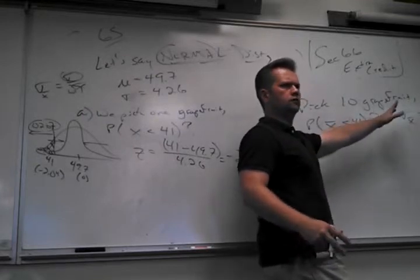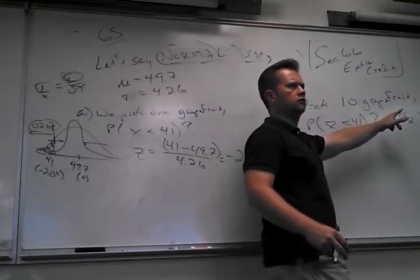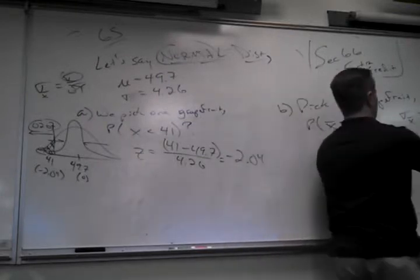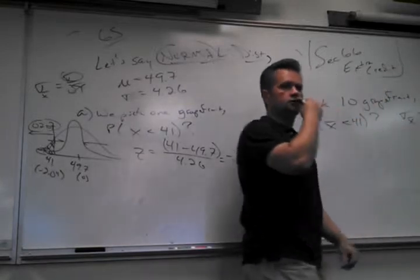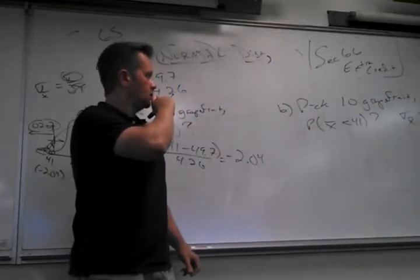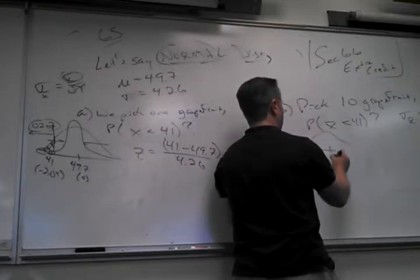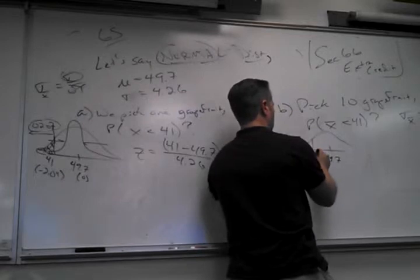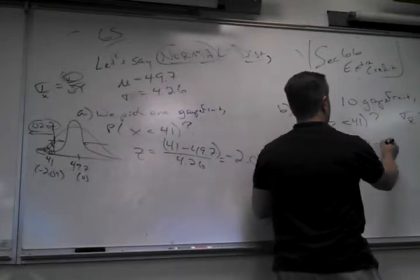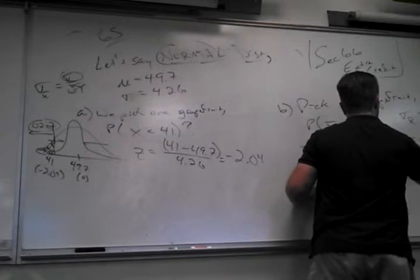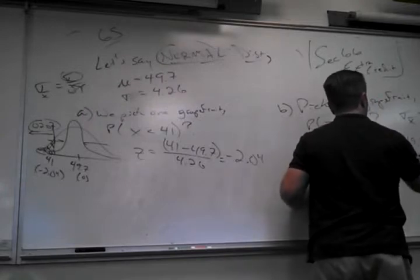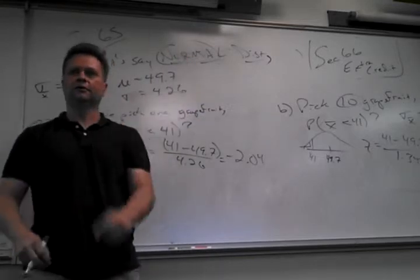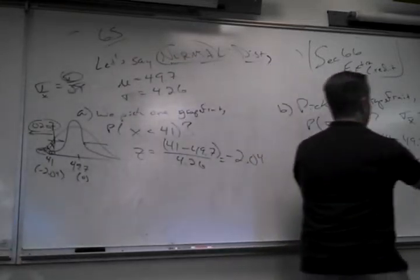New standard deviation: 4.26 divided by square root of 10 gives 1.347. The picture is skinnier but you don't need to be super precise drawing it. Z-score formula is exactly the same — same formula, different standard deviation value.